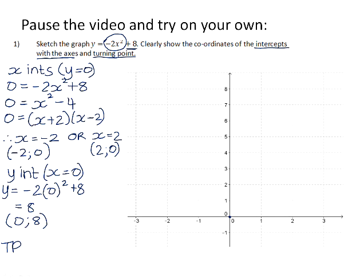So that means that the graph negative 2x squared has been shifted up by 8 units. So that means that our turning point will be exactly the same as our y-intercept. It will be at the point 0 and 8.